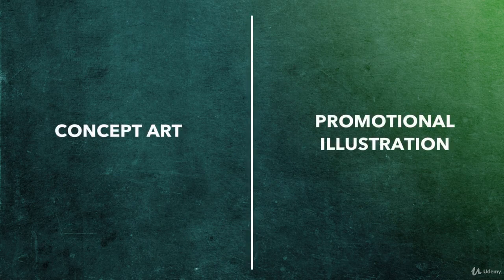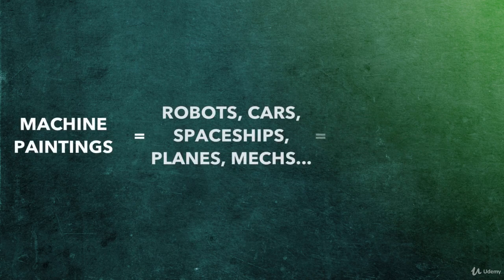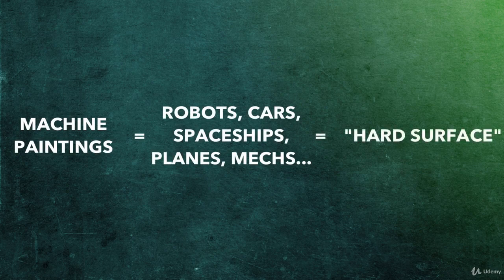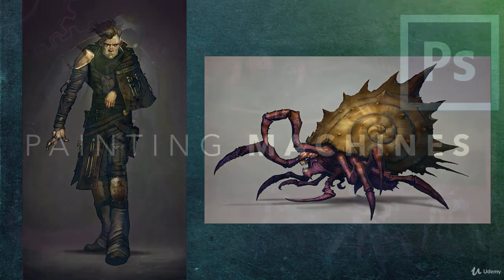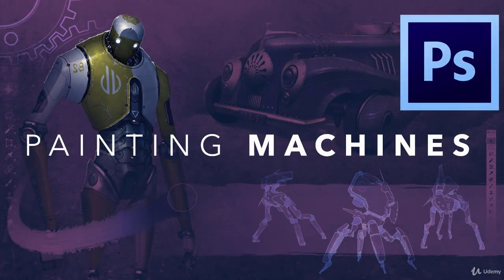Machine paintings, which in this course encompasses vehicles, robots, and weapons, are most commonly used as either concept art or promotional illustrations for movies, video games, or tabletop games, just to name a few. This entire facet of concept art is also referred to as hard surface. Along with character, environment, and creature design, machine design is one of the central pillars of a concept artist's skill set, and perhaps the most in demand.